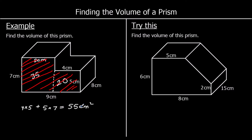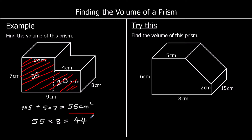So we've got 55 multiplied by how far back it goes, which is 8. So 55 times 8: 50 times 8 is 400, 5 times 8 is 40, so we've got 440 centimeters cubed.